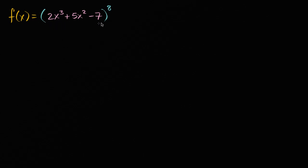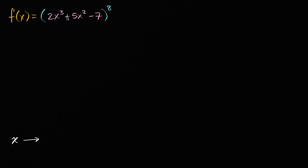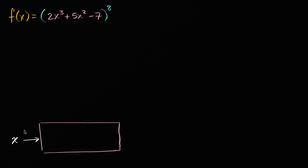The key here is to realize that this function can be viewed as a composition of two functions. Let me diagram it out. We're going to start with an x, and what's the first thing that we would do? If you were just trying to evaluate it given some x, well, the first thing you would take is two times that x to the third power plus five times that x squared, and then minus seven. So what if we imagined a function that just did that first part — just evaluated two x to the third plus five x squared minus seven for your x?